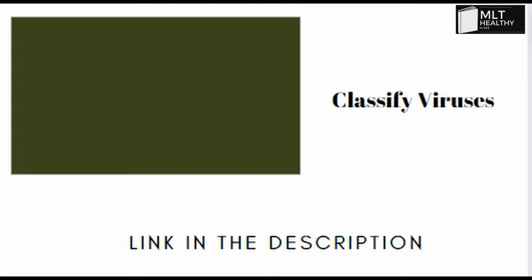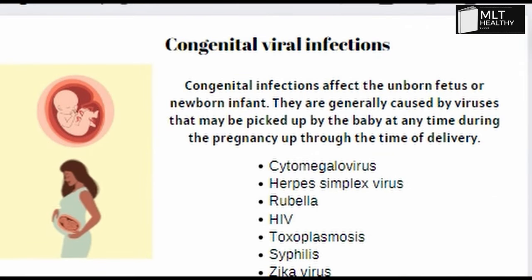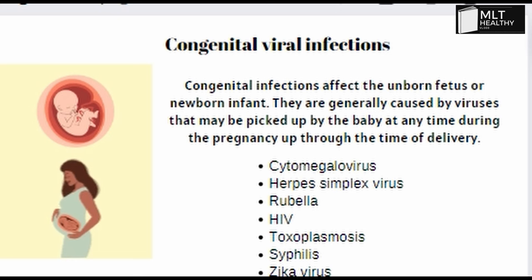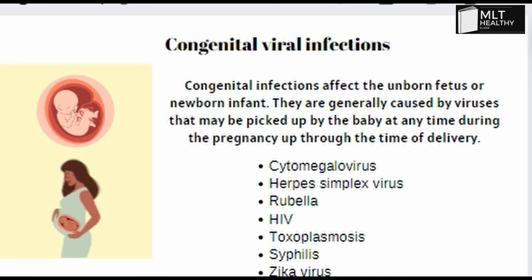Next, congenital viral infections. These are important for the exam. Congenital means infections passed to the fetus — the unborn baby — from the mother during pregnancy. At the time of delivery and throughout pregnancy, the infection can pass to the baby. Viruses in this category include cytomegalovirus, herpes simplex virus, rubella virus, HBV, toxoplasmosis, syphilis, and Zika virus.